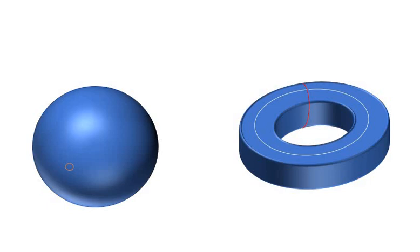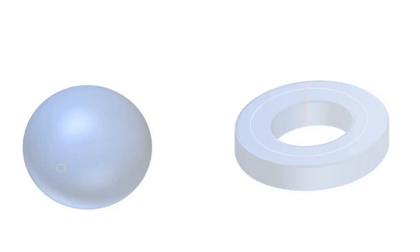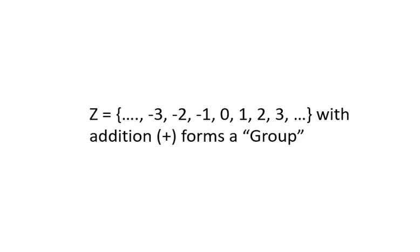In general, a group is just some set where we can combine two elements in some way to get a new element. One example of a group is the integers, in which the operation is addition. It's also the trivial group, which only has a single element.